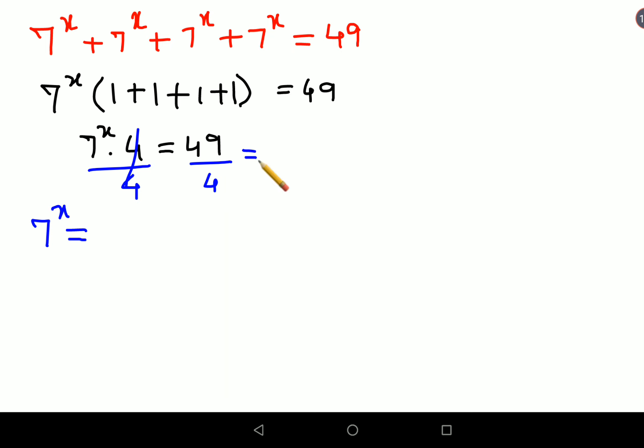So this eventually looks like 7^x = 49/4, which can be written as 7²/4², right? So this can be written as (7/2)². But now after this we are stuck, so at this point we will use log on both sides.